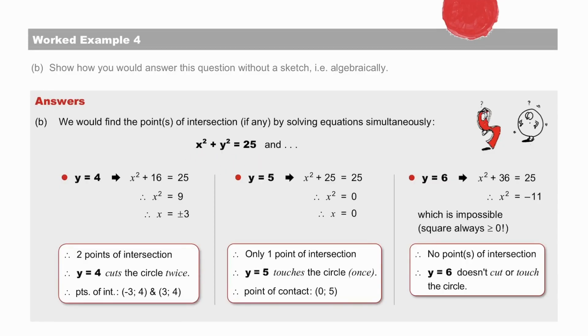When we solve this equation with y equal to 6, we find x squared equaling a negative number, which is just not possible. Therefore, no points of intersection.